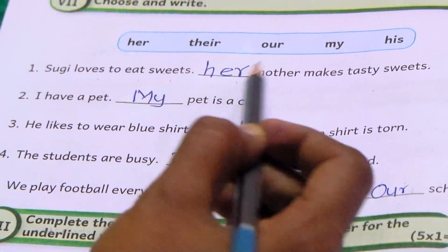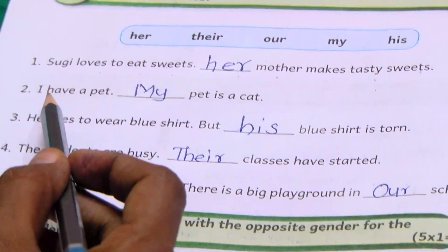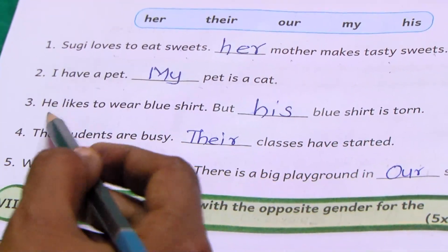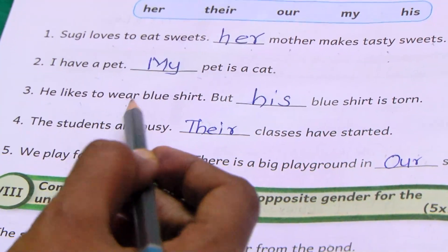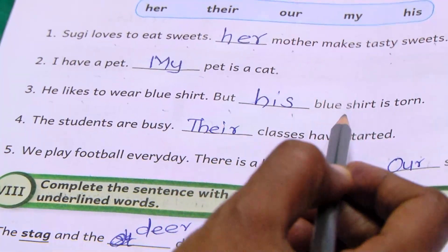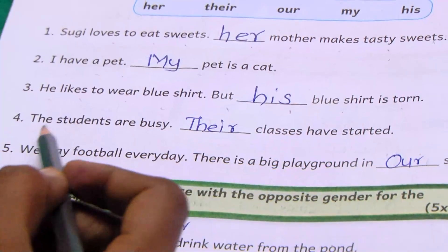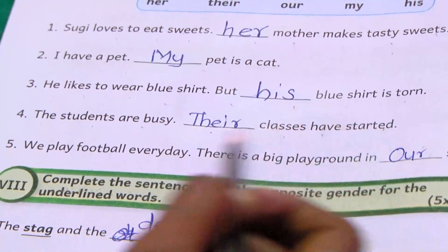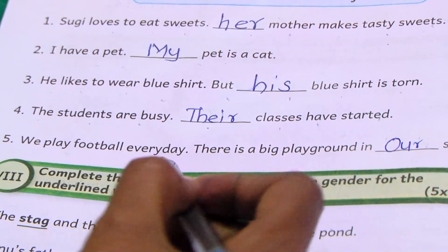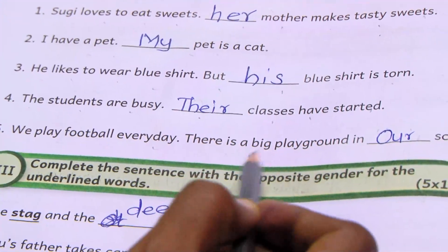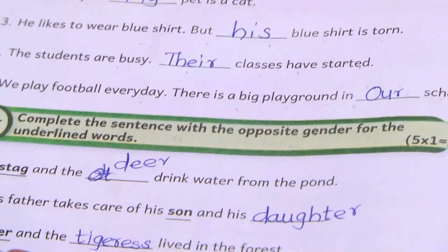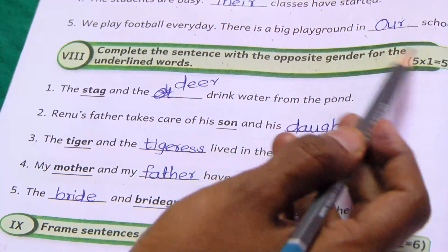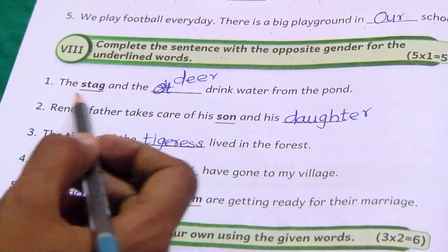Next one, choose and write. Sugi loves to eat sweets, her mother makes tasty sweets. I have a pet, my pet is a cat. He likes to wear blue shirt, but his blue shirt is torn. The students are busy, their classes have started. We play football everyday, there is a big playground in our school.